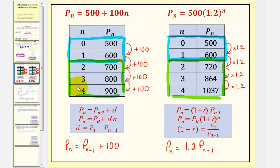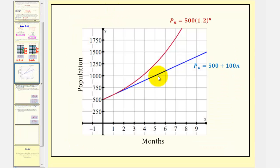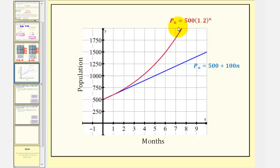Now let's compare the graphs of these two explicit equations. The blue line represents the linear growth, and the red curve represents the exponential growth. Comparing the graphs, if we assume exponential growth, we can see the population would increase much faster than if we assume linear growth.